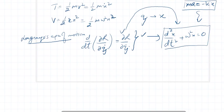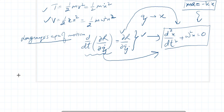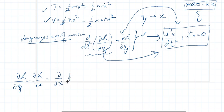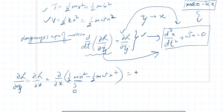Let us proceed and calculate the various terms. First, ∂L/∂x means the partial derivative of (½mẋ² − ½mω²x²) with respect to x. The first term is constant with respect to x, so its derivative is zero. The derivative of the second term gives −mω²x, since the derivative of x² is 2x and the rest is constant. So ∂L/∂x = −mω²x.